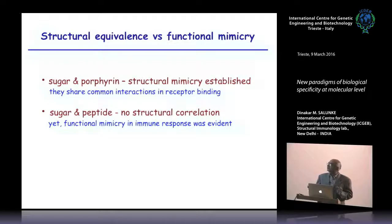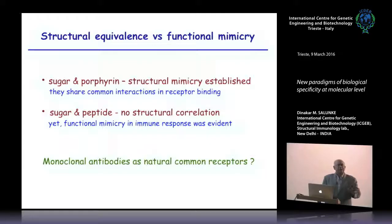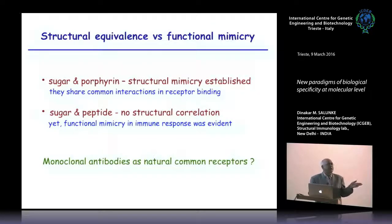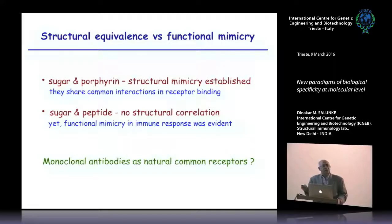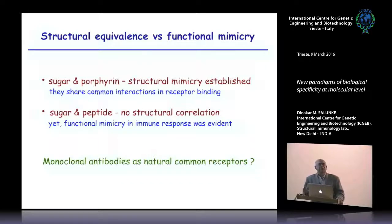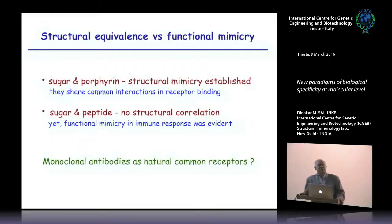To understand this functional mimicry further, concanavalin A as a receptor is not the right tool because we are not studying the plant protein's functionality. We really need to work with antibodies, and you cannot do molecular-level description by analyzing polyclonal antibodies — all you can do is ELISA to show cross-reactivity. To analyze this at the molecular level you need natural receptors linked to the immune system, and the only way to do that is to make monoclonal antibodies.